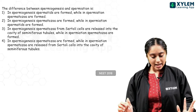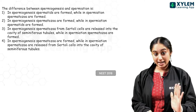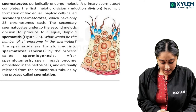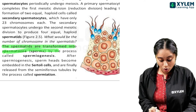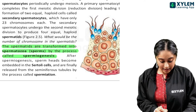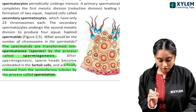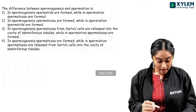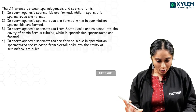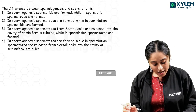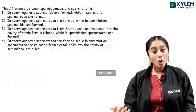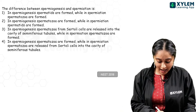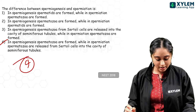Here we have many options. NCERT says: spermatids are transformed into spermatozoa by a process called spermiogenesis. And they are finally released from the seminiferous tubules by a process called spermiation. So in spermiogenesis, spermatozoa is formed. While in spermiation, the spermatozoa is released from the Sertoli cells into the cavity of the seminiferous tubules. Answer will be 4.